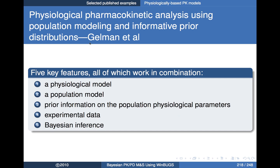The original paper by Gelman et al. argues that five key features are either necessary or desirable to make this process work, all of which work in combination: a physiologic model, a population model describing inter-individual variation, prior information on population physiologic parameters, experimental data, and Bayesian inferential procedures.